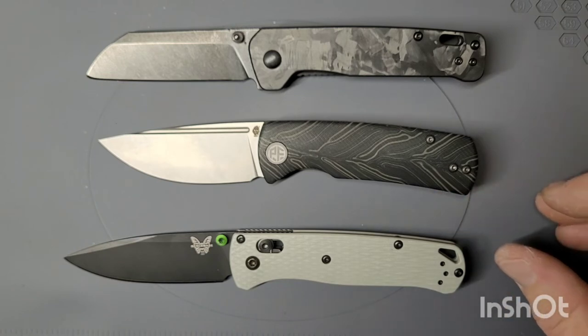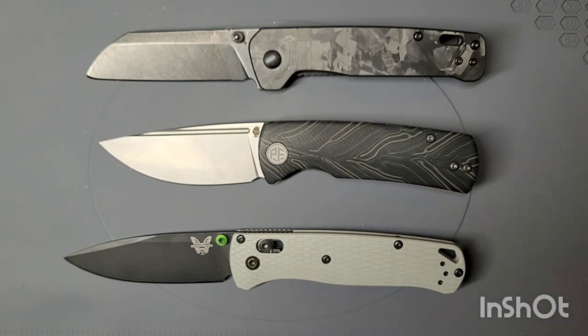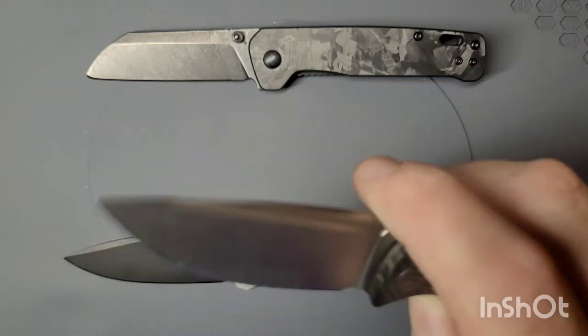Penguin, again, a little longer. Handle on the Beluga and the Penguin are about the same. But again, blades are both longer on the other two.